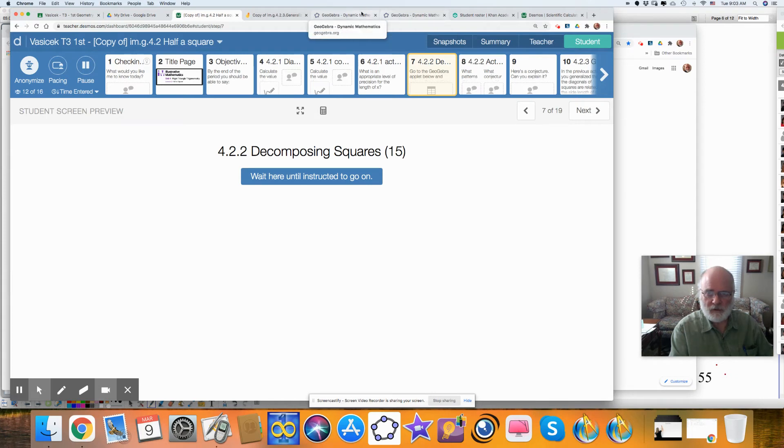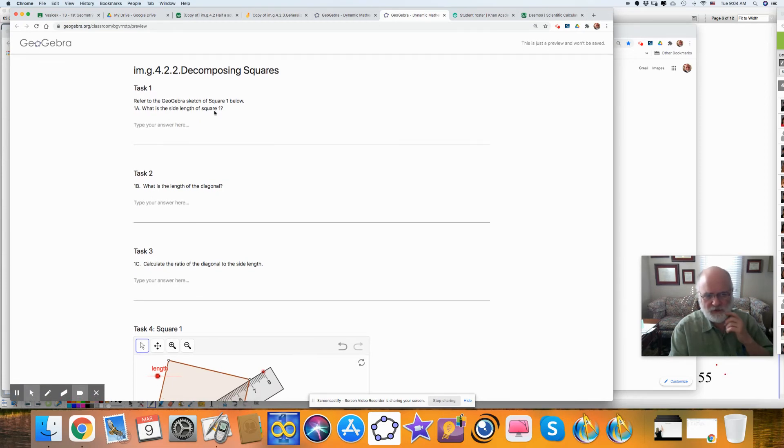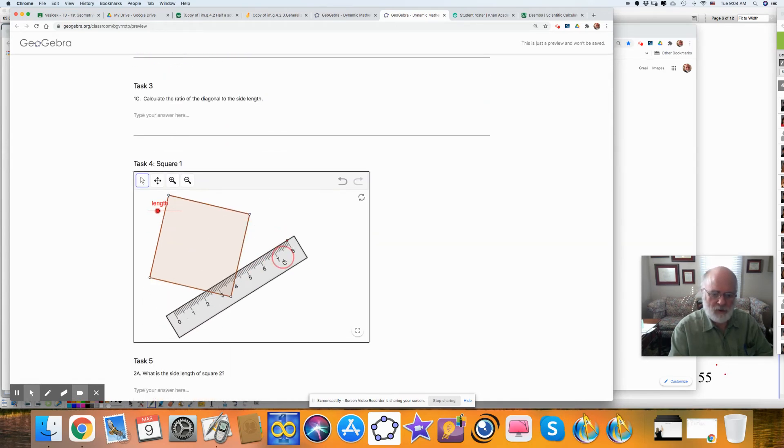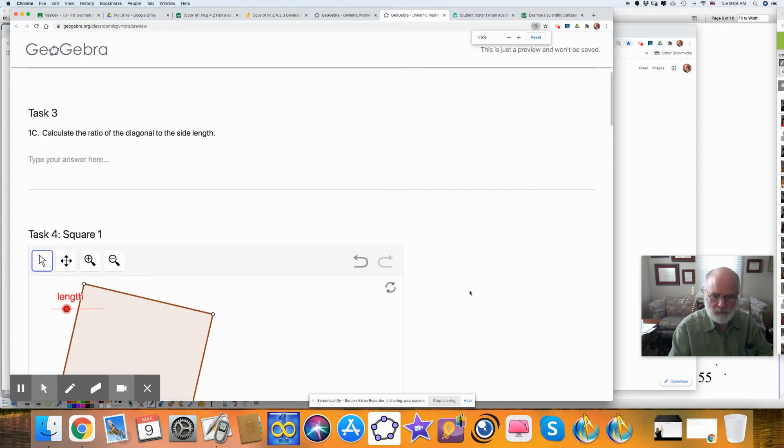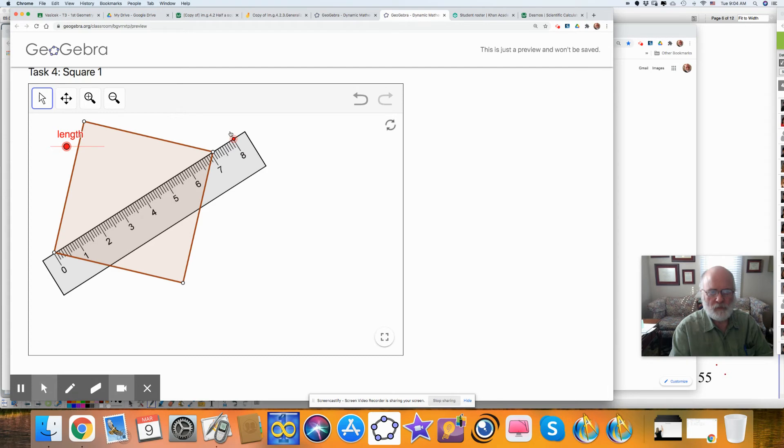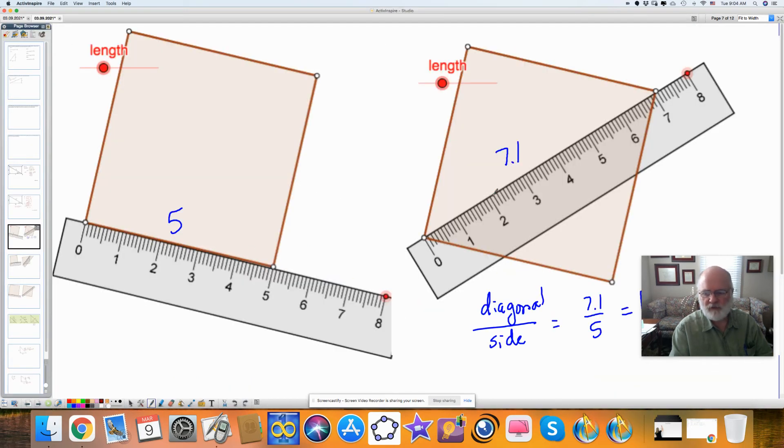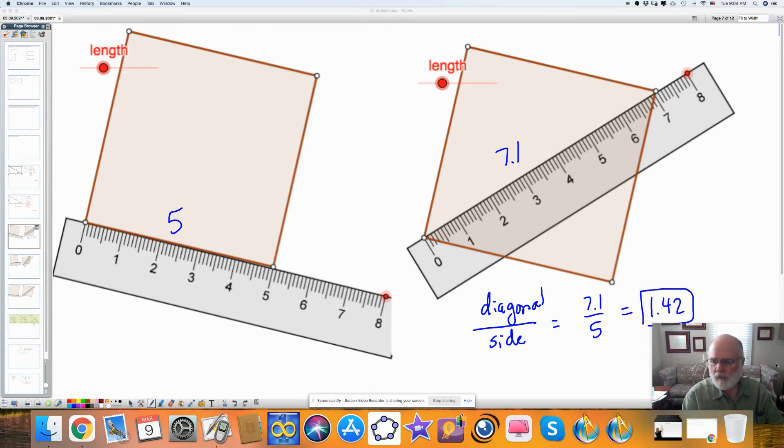So if we go to a Geogebra applet, and I think I can do that here, there are several tasks. It says here, refer to the task, the square one below, what is the side length, what is the length of the diagonal, calculate the ratio of the diagonal to the square. And when you do this, you should move this around, you can rotate it with the red button, you should line up the zero on the ruler with one of the vertices. Then you can measure this. So if I try to make this larger so you can see it, let's see here, I measure this as 5, and I measure the diagonal as 7.1. And there's three of these for you to do, and then you can make a conjecture.